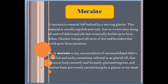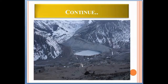A moraine is any accumulation of unconsolidated debris, regolith, and rock — sometimes referred to as glacial till — that occurs in both currently and formerly glaciated regions, and that has been previously carried along by a glacier or ice sheet.